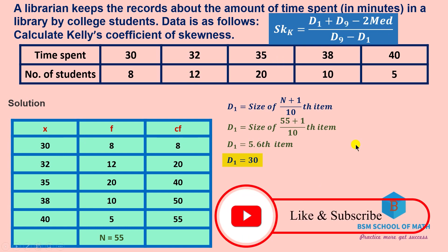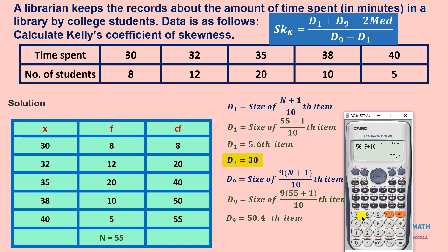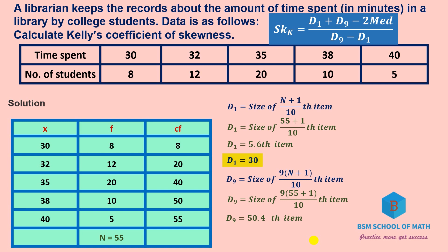Next, D9 equals size of 9(N plus 1)/10th item. N equals 55, so 55 plus 1 is 56 times 9 divided by 10, which is 50.4. At 50.4 or above, we go to the 51st item, which corresponds to D9 equals 38.